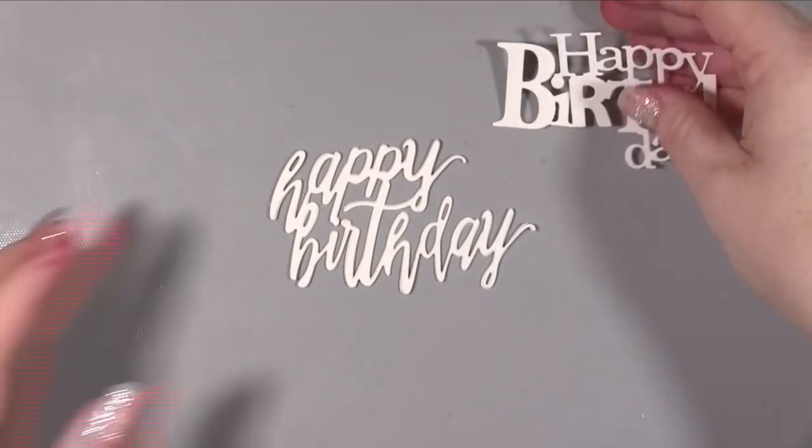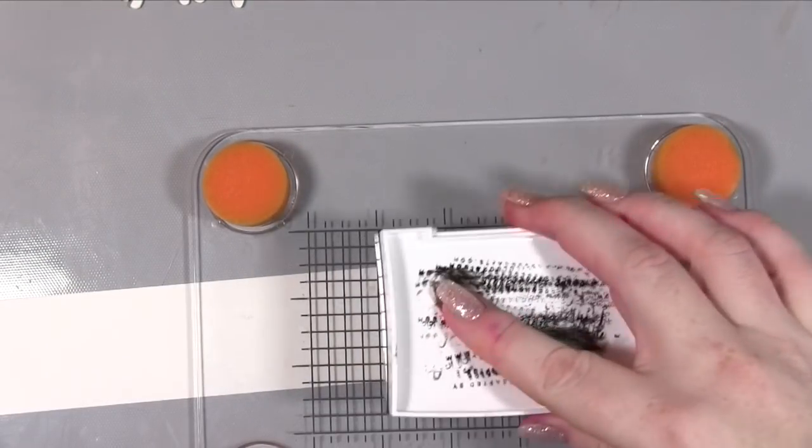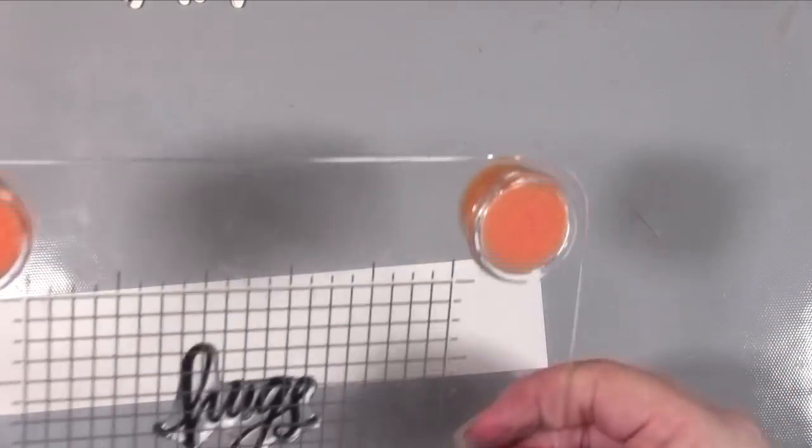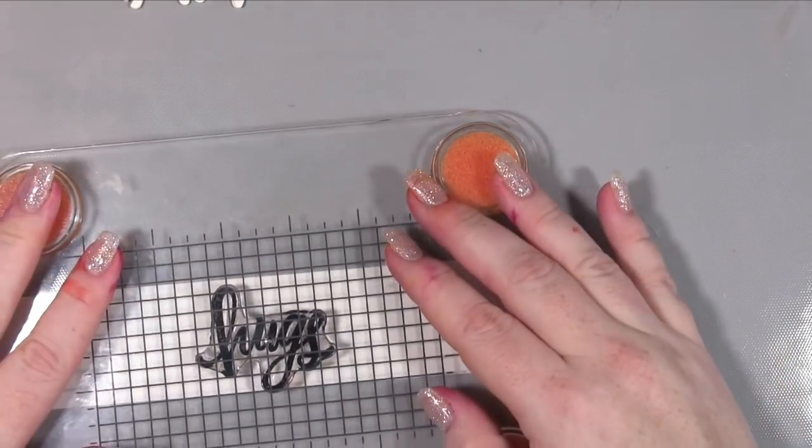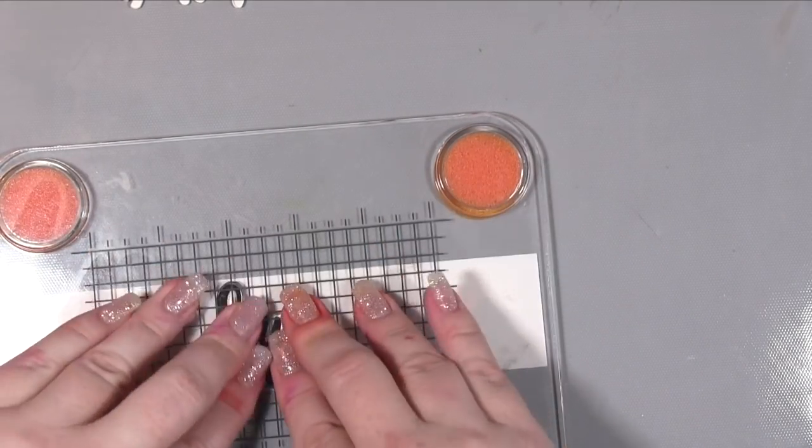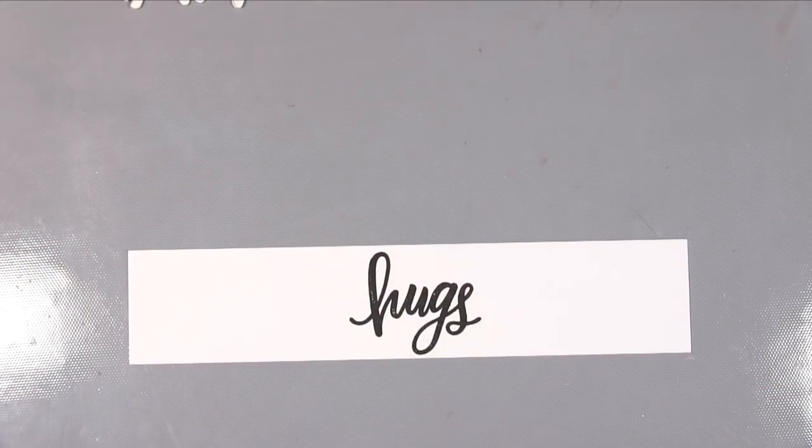Then I cut another one, this is a Sue Wilson one. I didn't cut this three times, I left that as a single layer, so a different look as well as a different sentiment. For the third sentiment I decided to use a Simon Says Stamp stamp and I just stamped that using some black ink onto the white card and cut that into a little flag.